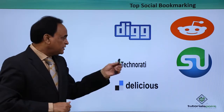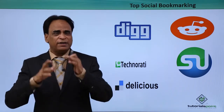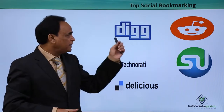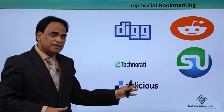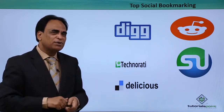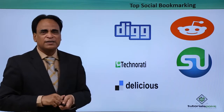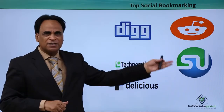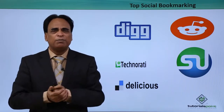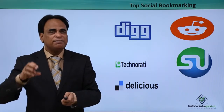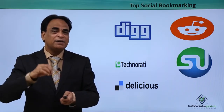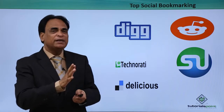StumbleUpon is also a very important platform — it is more of a blog where you can post articles, but you can also tag your links. Delicious and Technorati are very old compared to Digg, StumbleUpon, and Reddit. Delicious was the first and foremost social bookmarking site that came into existence, followed by Technorati, StumbleUpon, Reddit, and Digg — all very popular social bookmarking sites.